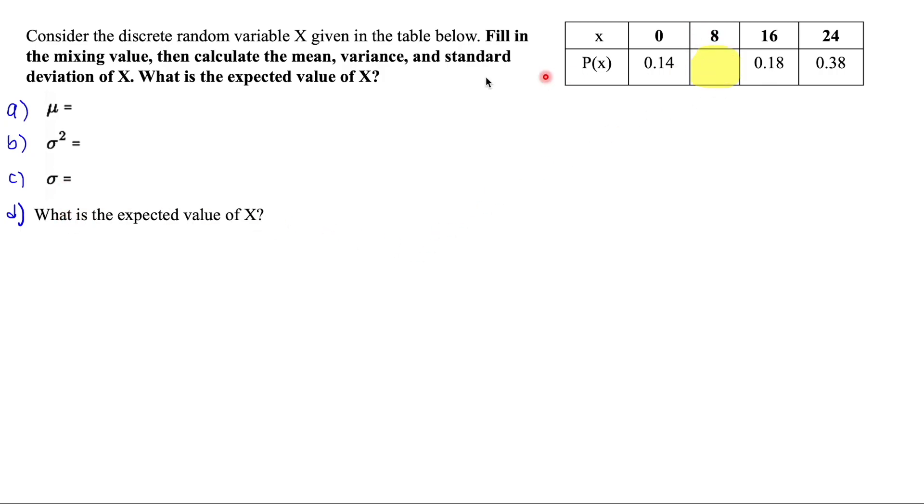So the first thing that I noticed with this discrete probability distribution is there is a missing value in the table. So let's go back over and practice how we do that. We know that with a probability distribution, the sum of all of these values needs to be equal to one. So that means that on my calculator, I would do one minus all of the values that I do have. So if I add up all of those values and then subtract it from a total of one, I'm going to get that this missing probability value is 0.30.